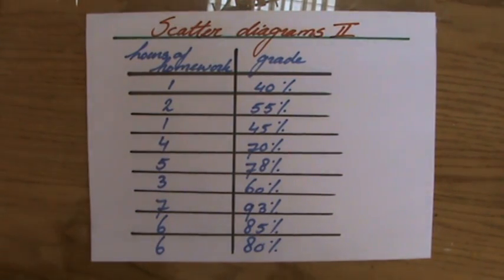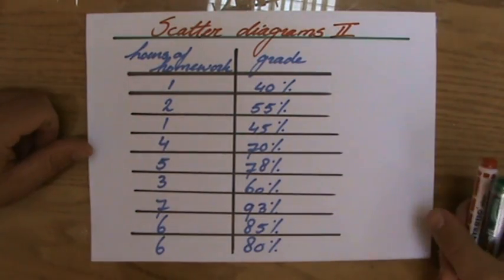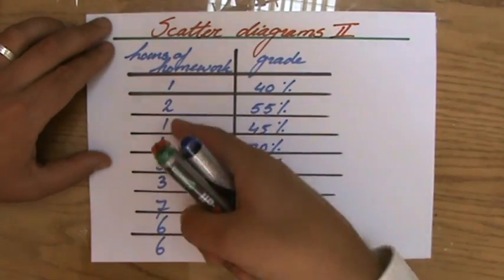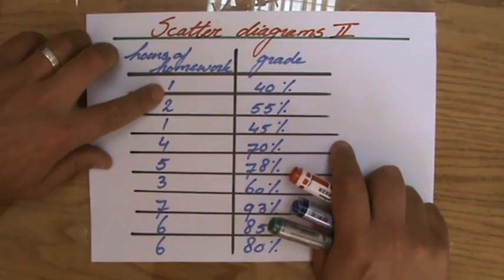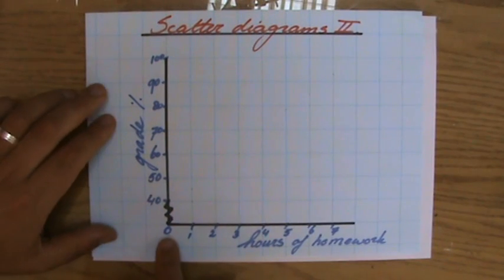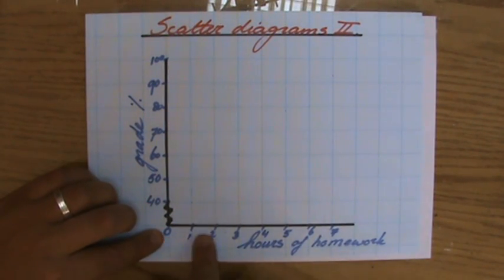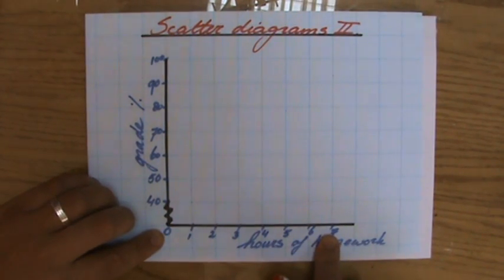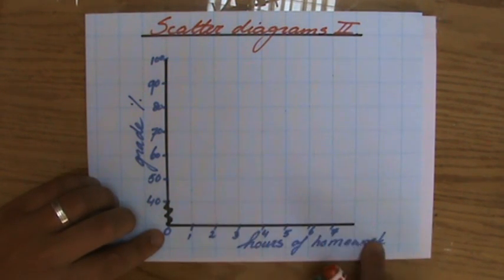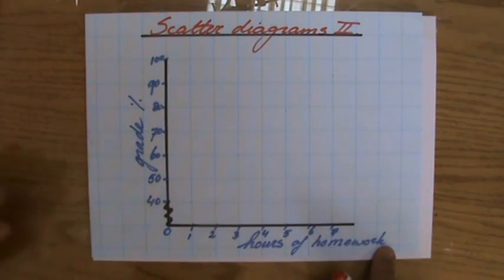I have to construct a scatter diagram. To start with, the hours of homework go from 1, that's the lowest value, to 7, the highest value. So on my horizontal axis, I can go from 0 up to 7. I don't need to go any further. I've chosen one block to be one hour of homework. Please also label your axis.